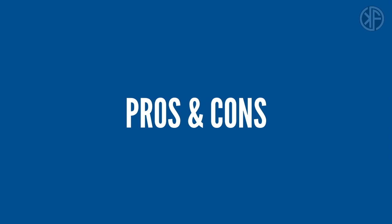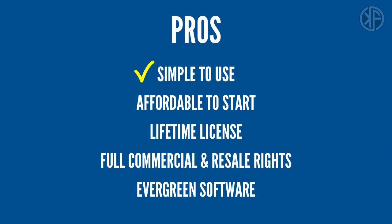Now let's talk pros and cons. Starting with the pros: Wibbitz is clearly simple to use — you can make a professional 1080p video quickly with access to their licensed video, image assets, and music tracks. Customization is simple, and you can add your own images and video clips. It's affordable to get started at just ten dollars per month annually, or fifteen dollars monthly. You get a lifetime license for the videos you create and full commercial and resale rights — a plus if you're starting an agency or freelancing. This is evergreen software with an enterprise-based heritage.